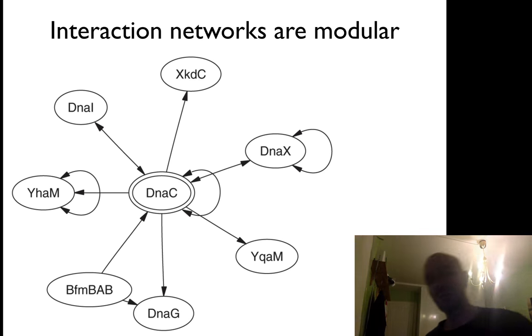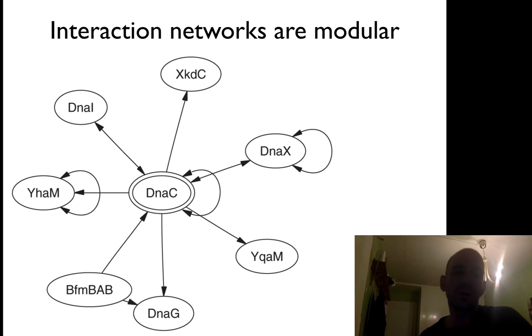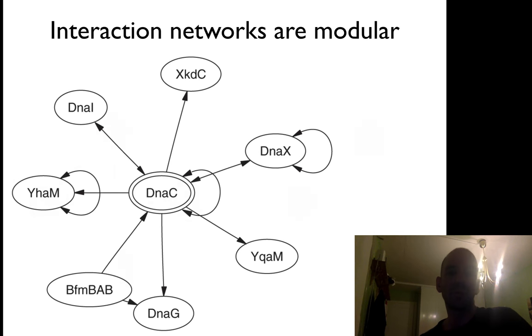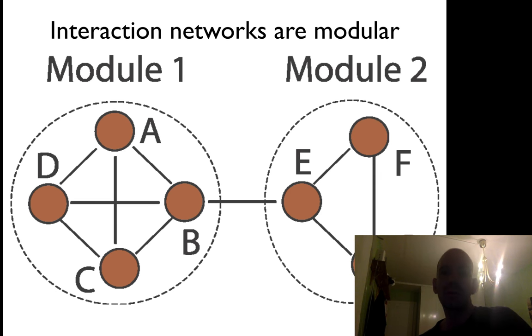If you do this, you see that interaction networks are often modular. You often have a central hub protein that interacts with many other proteins, while the individual proteins do not interact with each other as much. You have a power law distribution, so some proteins have many interactions but most have very few.